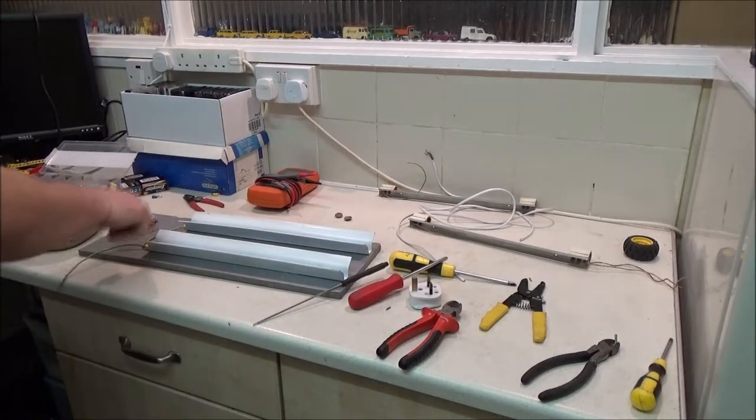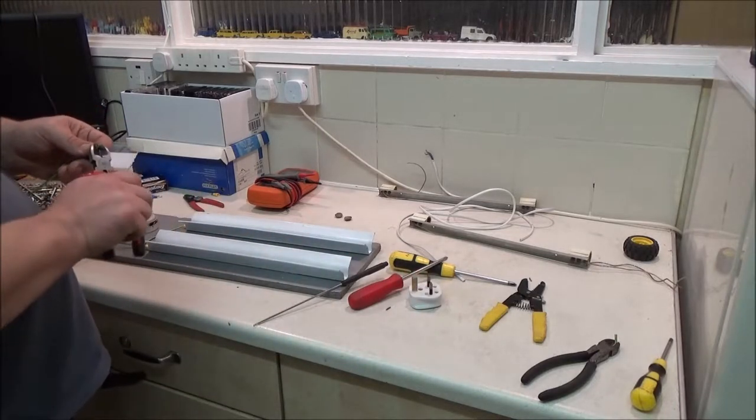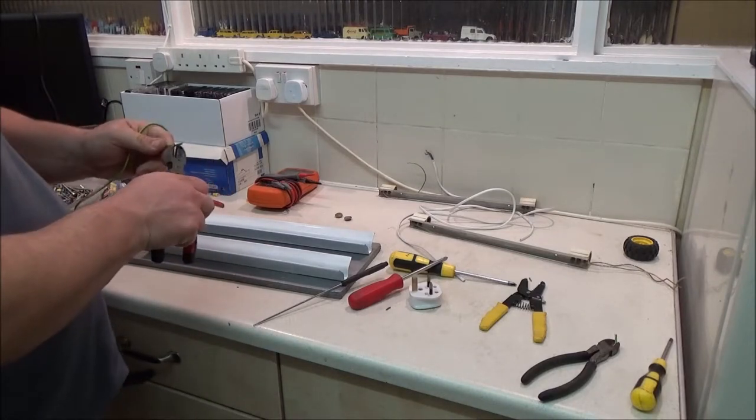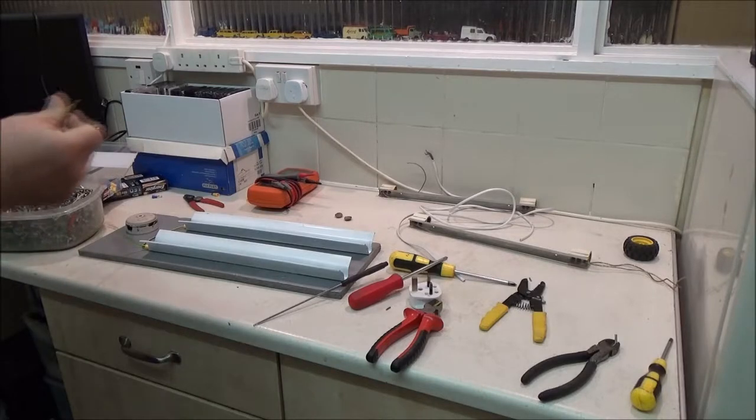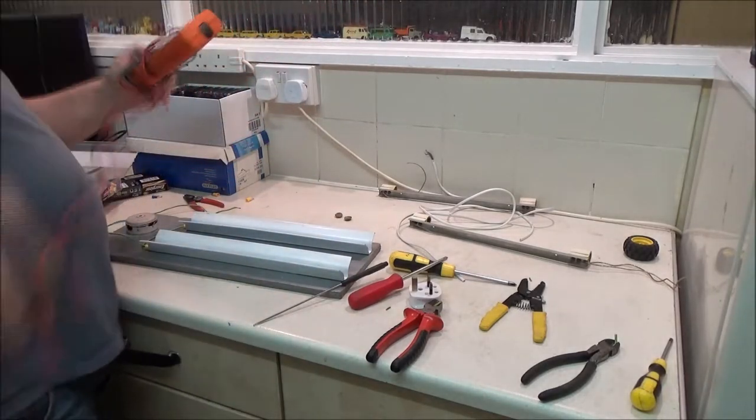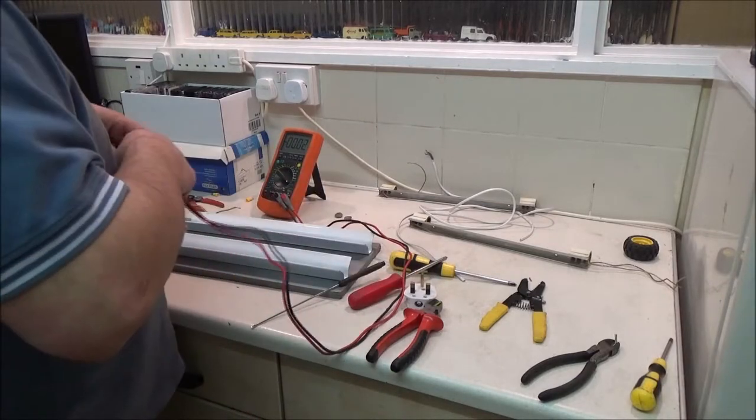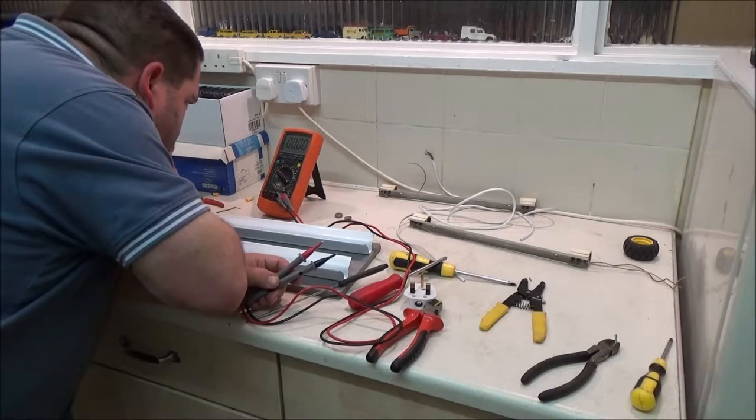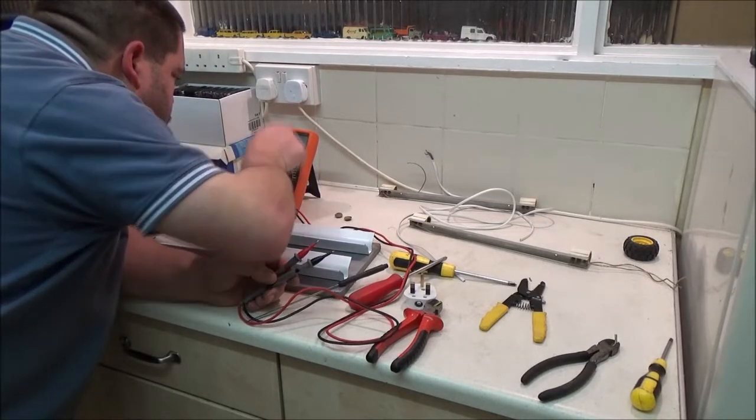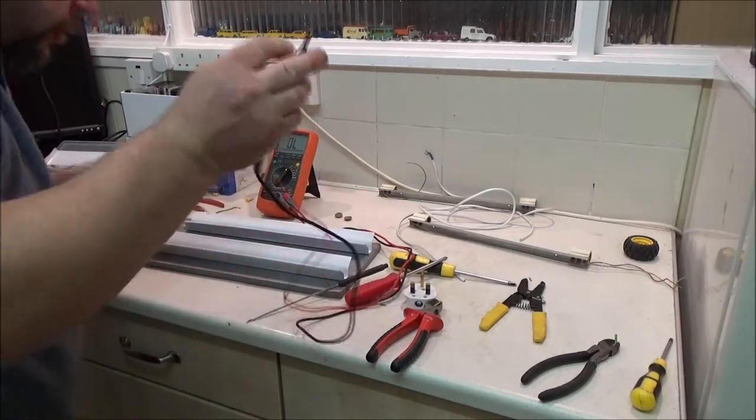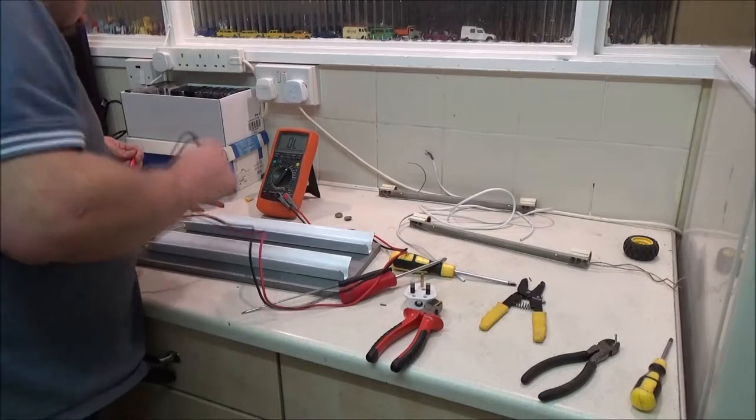Right, so I just want to make sure that these points are actually contacting with the trays. So I need to strip a bit of this off, get out my meter, turn it on. Now where's continuity on my little dial? Yep, it's a very scratchy beep but it's a beep. Good, that's all I needed to know.